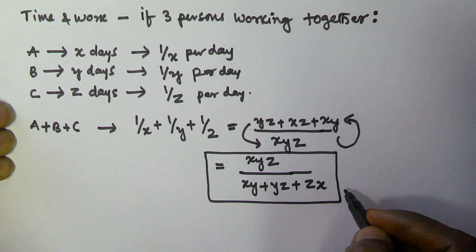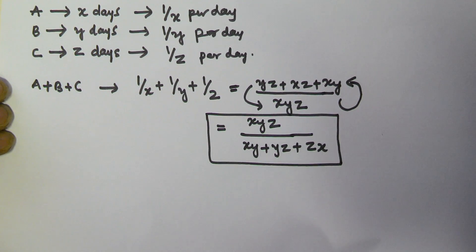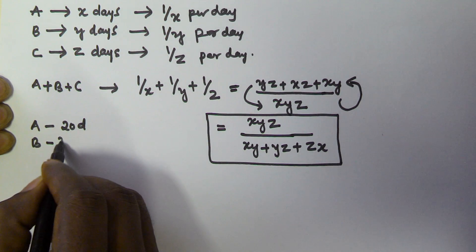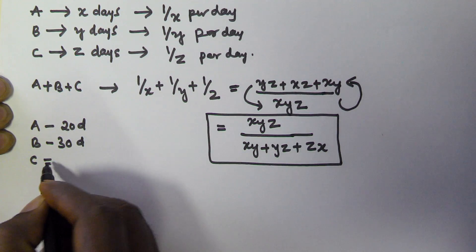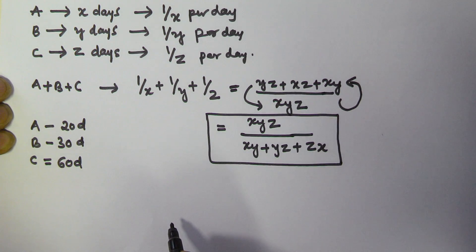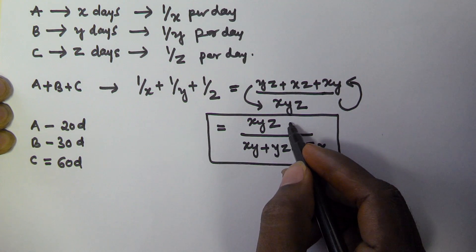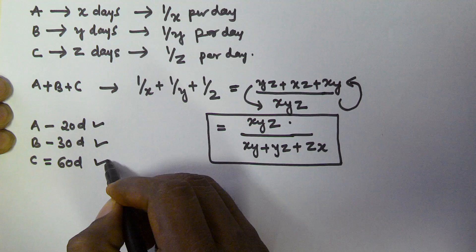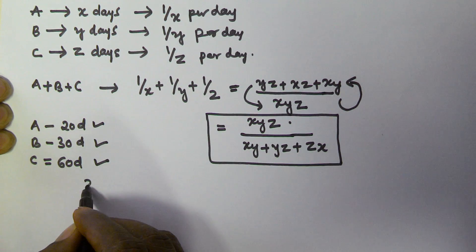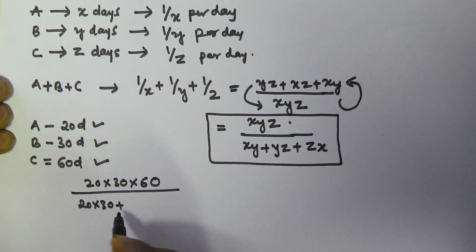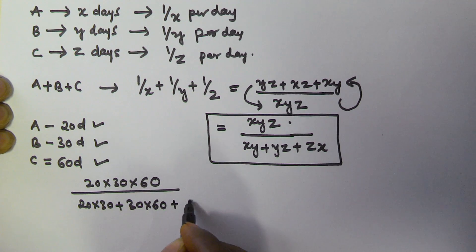Let's see one example problem based on this concept. Assume A takes 20 days to finish the work, B takes 30 days, and C takes 60 days. If A, B, and C are working together, how many days will they take? Using the formula, we substitute X = 20, Y = 30, Z = 60. That gives us (20 × 30 × 60) / (20×30 + 30×60 + 60×20).